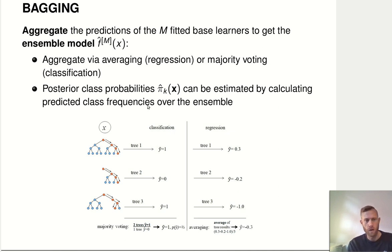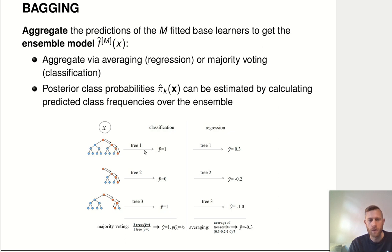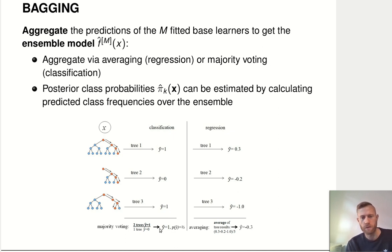Here's an example: we have an ensemble with three trees. These are the three models, and now we feed an observation into this ensemble. For the first ensemble member it goes one way, for the second it also goes that way, and for the third it goes another way. We have different predictions for classification: it predicts one twice and predicts zero one time, so majority voting says we predict y equals one. The posterior probability would be two-thirds because two of the three ensemble members predicted class one.